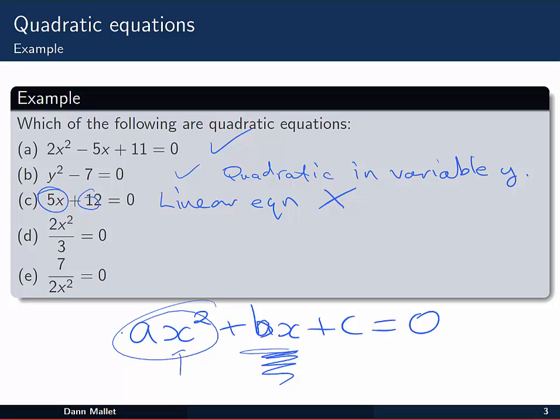In part D, we've got 2 on 3 x squared. That is a quadratic as well. It doesn't matter that we have no constant term or bx term. All we need is that x squared term really. And that is there. It's equal to zero, so that one's okay.